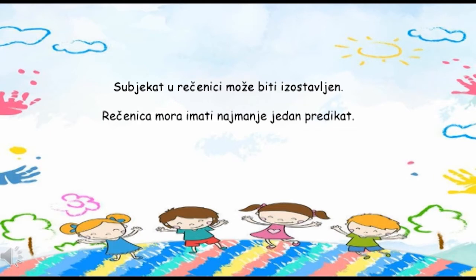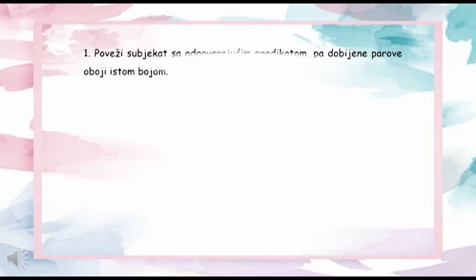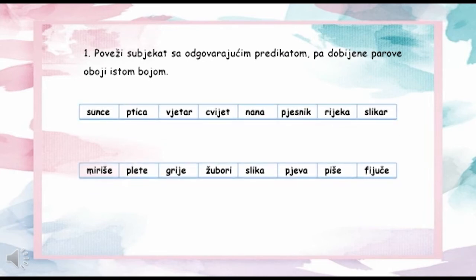Subjekat u rečenici može biti izostavljen, ali rečenica mora imati najmanje jedan predikat. Hajde sada da prođemo kroz nekoliko primjera. Otvorite vaše sveske za školski rad i napišite prvi zadatak.